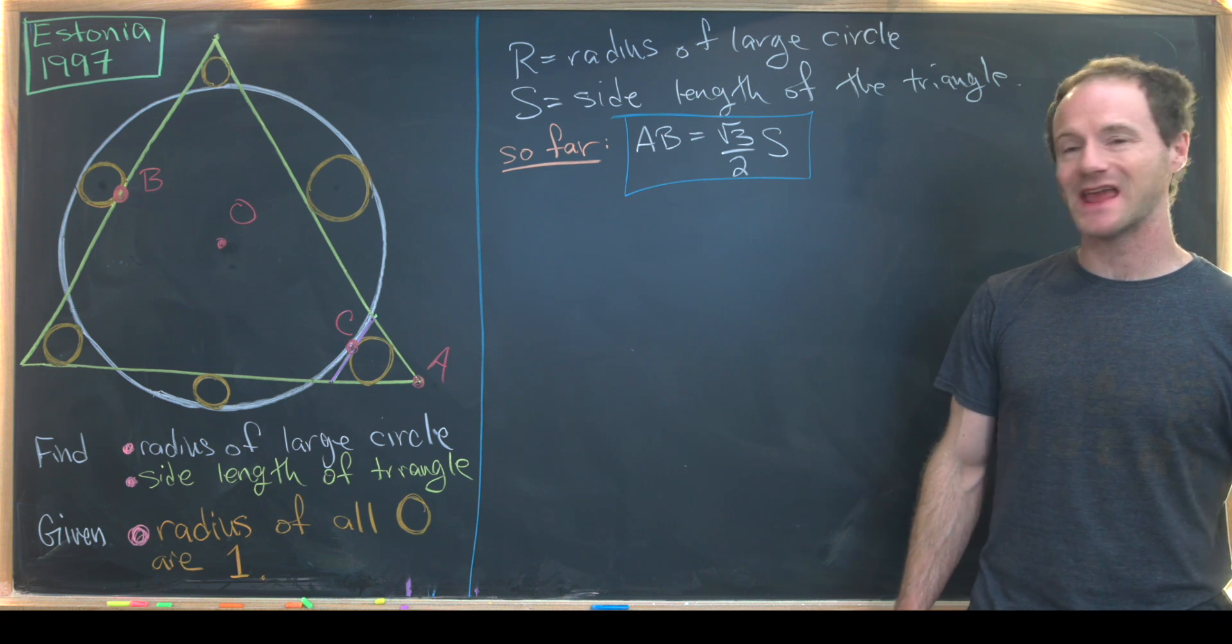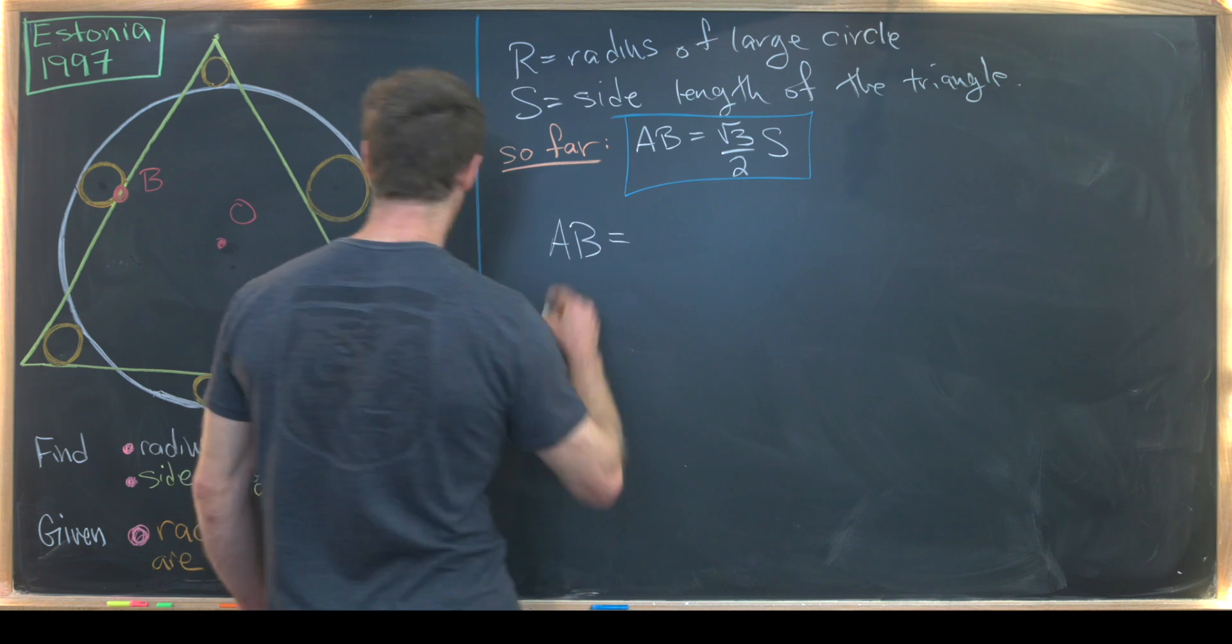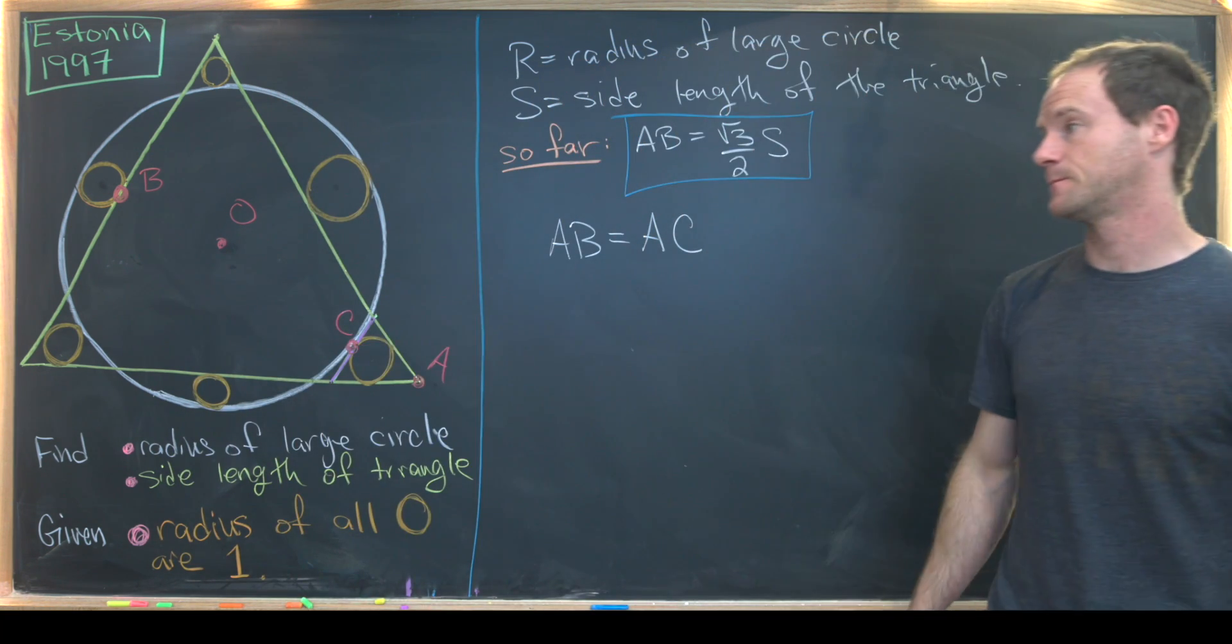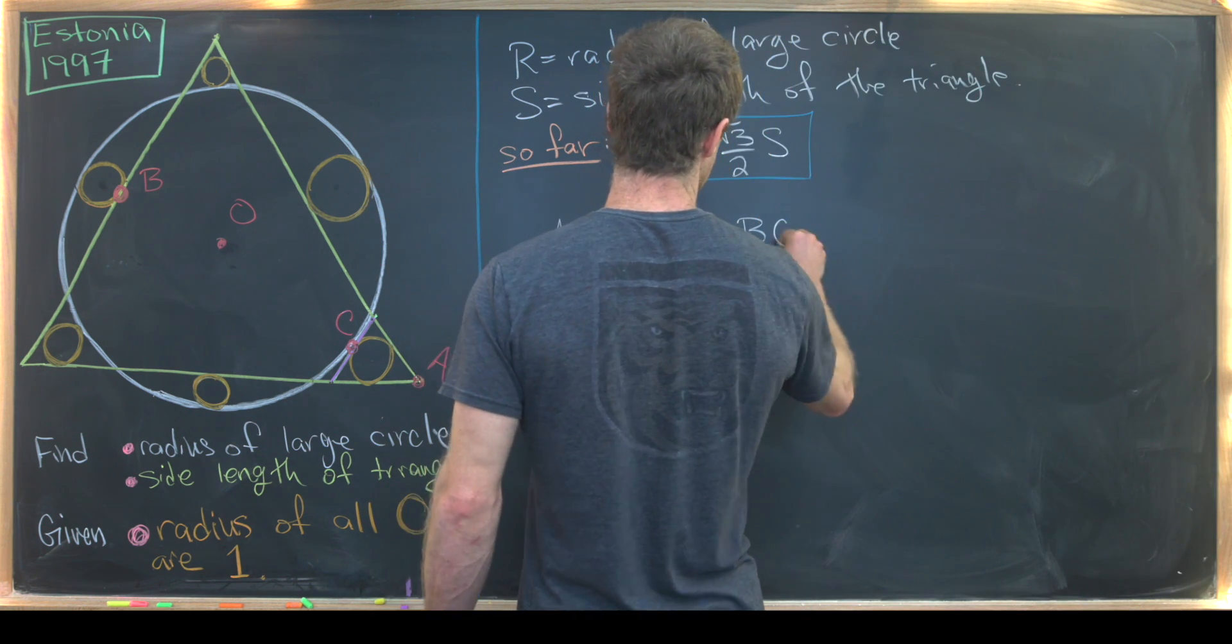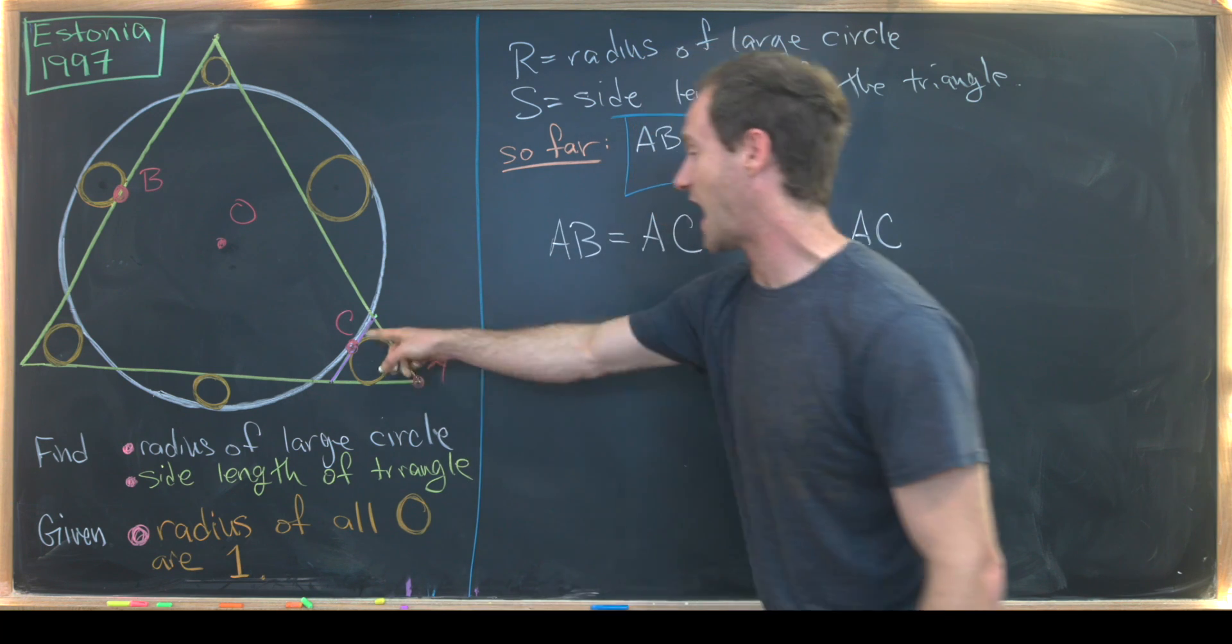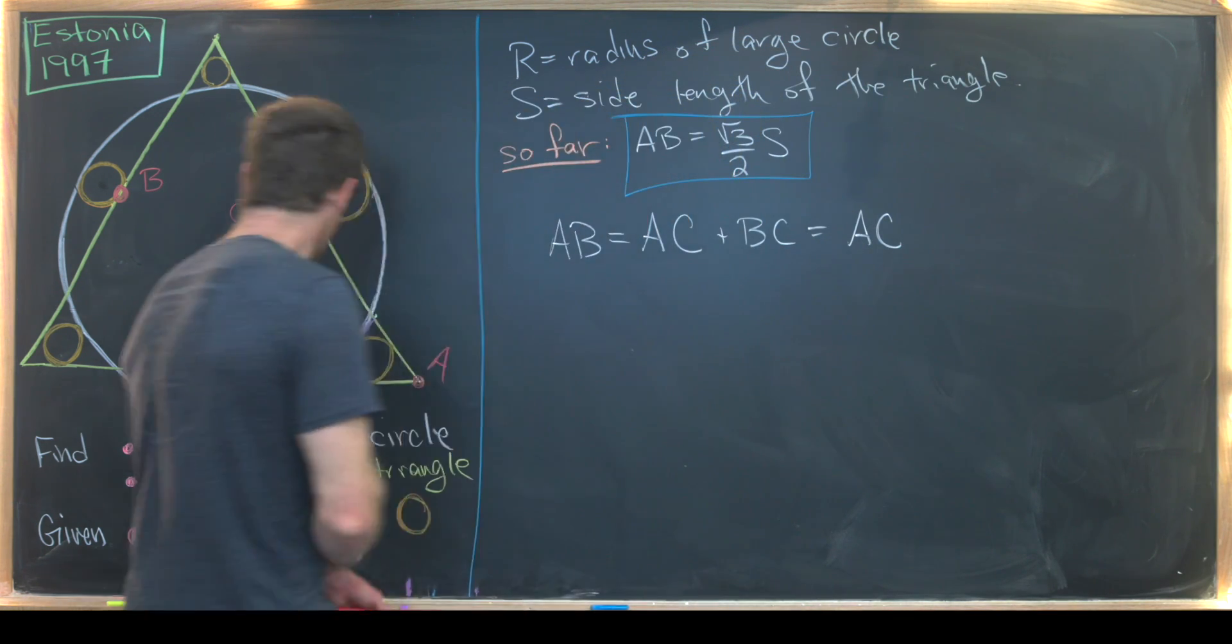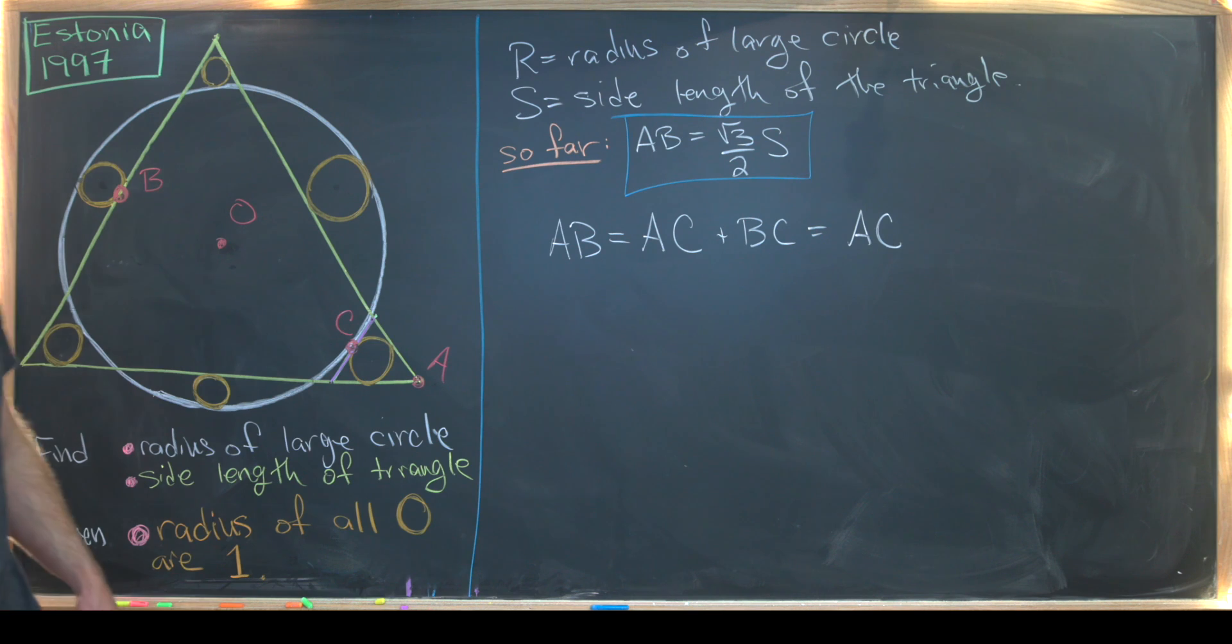Now I want to calculate length AB one more way. That'll be like this. So notice AB is also going to be equal to the length AC and then the length BC. But notice that's equal to length AC, and then BC can be easily calculated because BC is the diameter of the large circle minus the diameter of one of these small circles. But we know the diameter of this small circle is one.